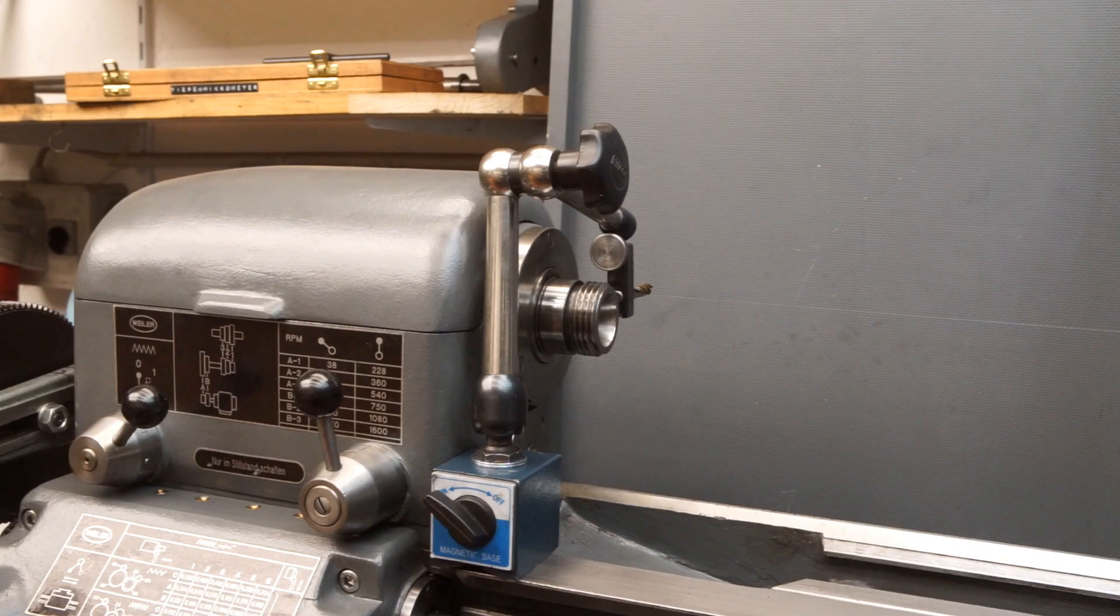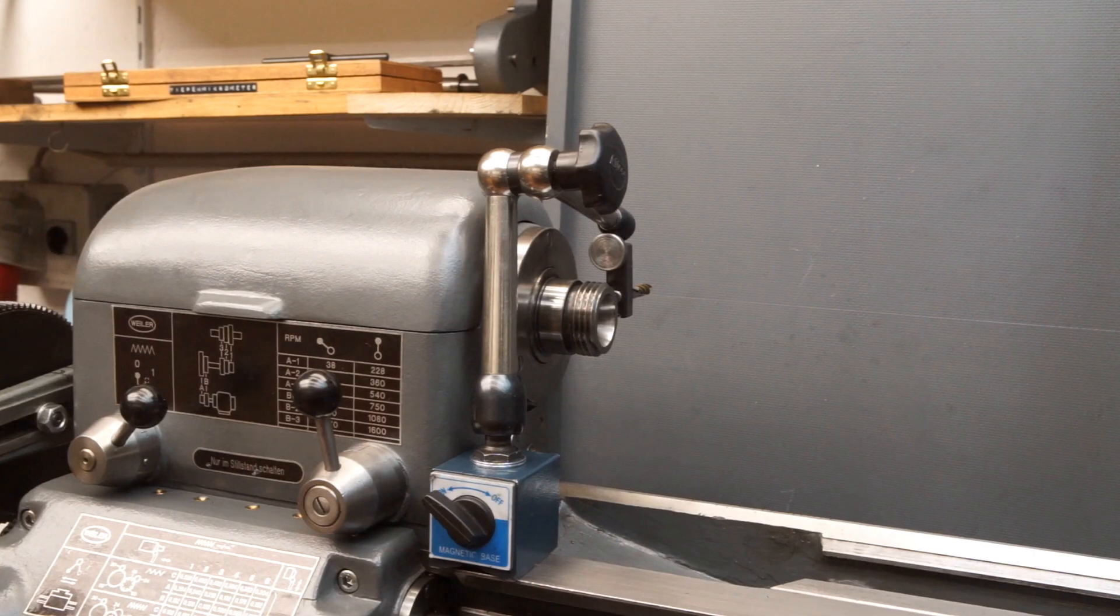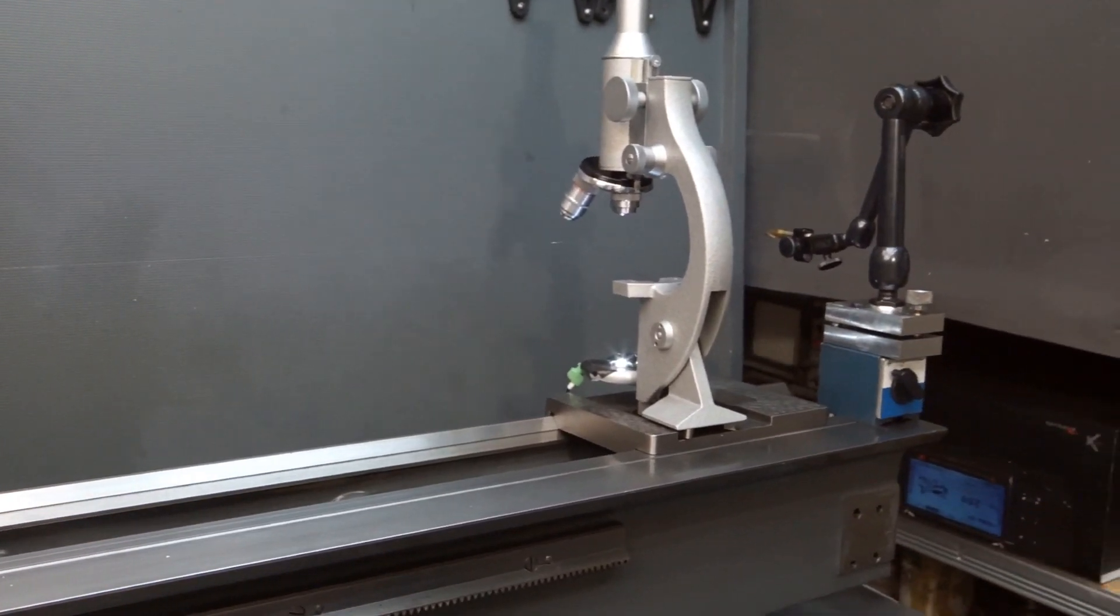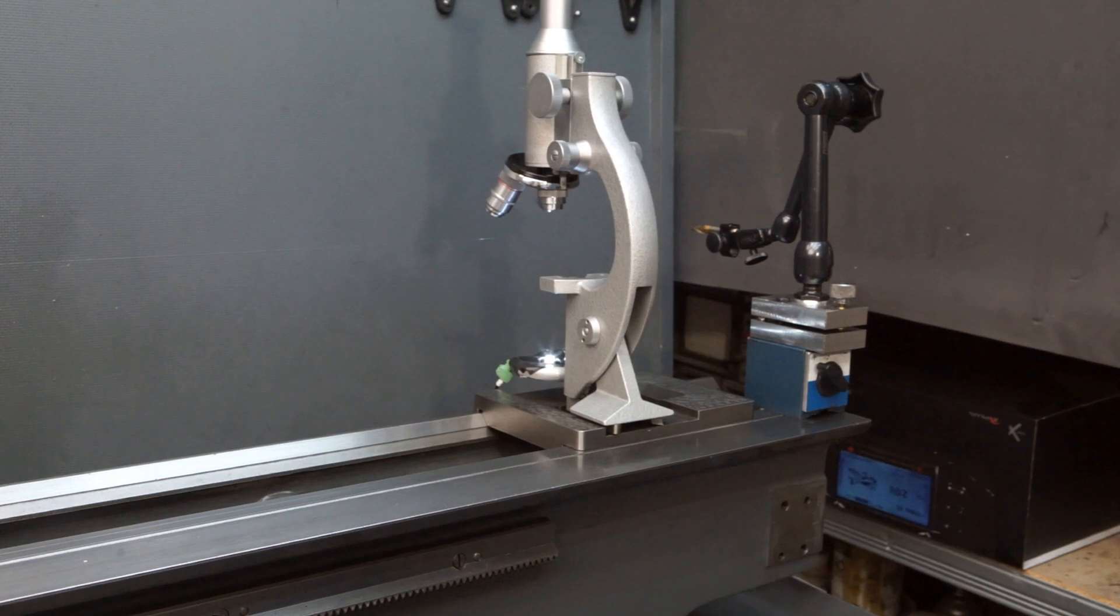I stretched a 0.08mm thin fishing line between two indicator holders mounted at the ends of the machine base. I mounted the microscope required for the measurement onto the bottom part of the tailstock.